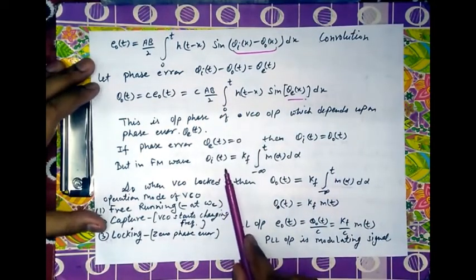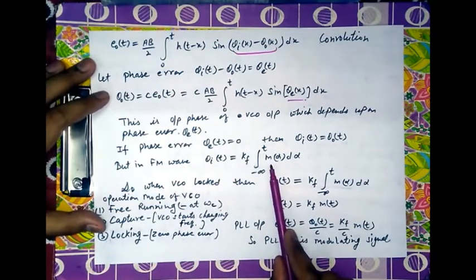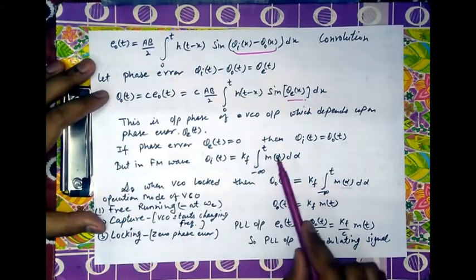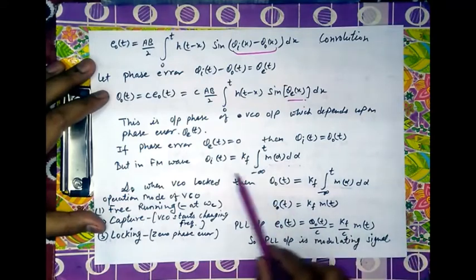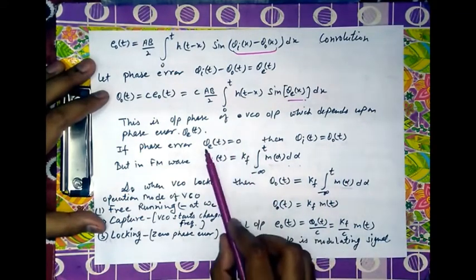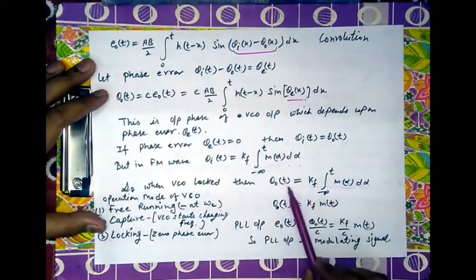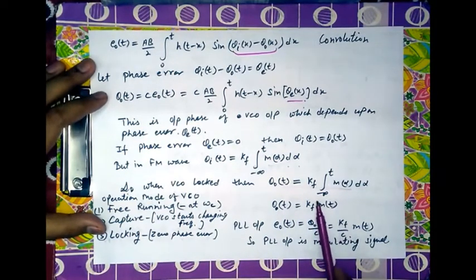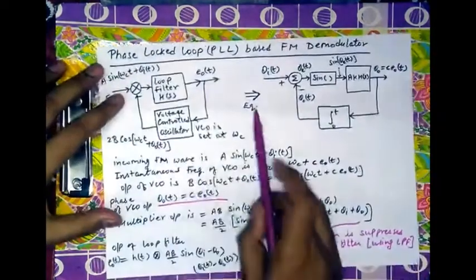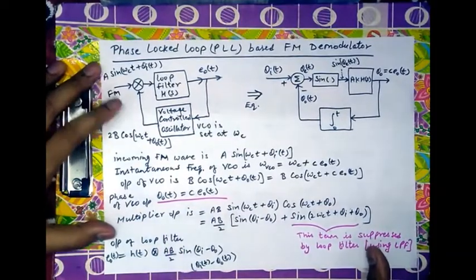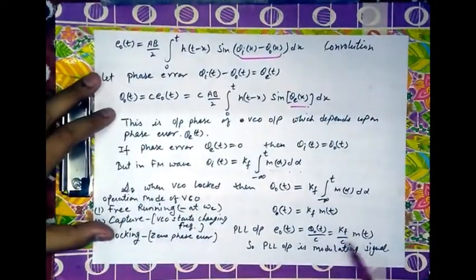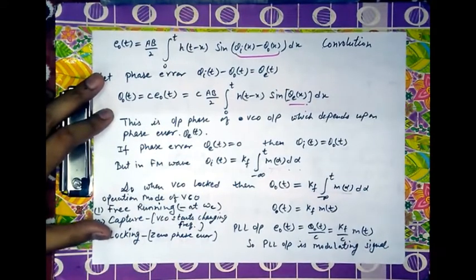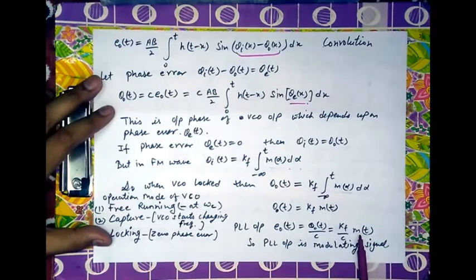From FM theory, the instantaneous phase θ_i(t) = K_f·∫_{-∞}^{t} m(α) dα, where m(t) is the modulating signal. When phase error is zero, θ_0(t) = θ_i(t). Differentiating, dθ_0/dt = K_f·m(t), so the output phase of the VCO depends directly on the modulating signal. Since e_0(t) = θ_0(t)/c, the PLL output becomes e_0(t) = (K_f/c)·m(t). Thus the output of the phase locked loop is the modulating signal scaled by a constant.